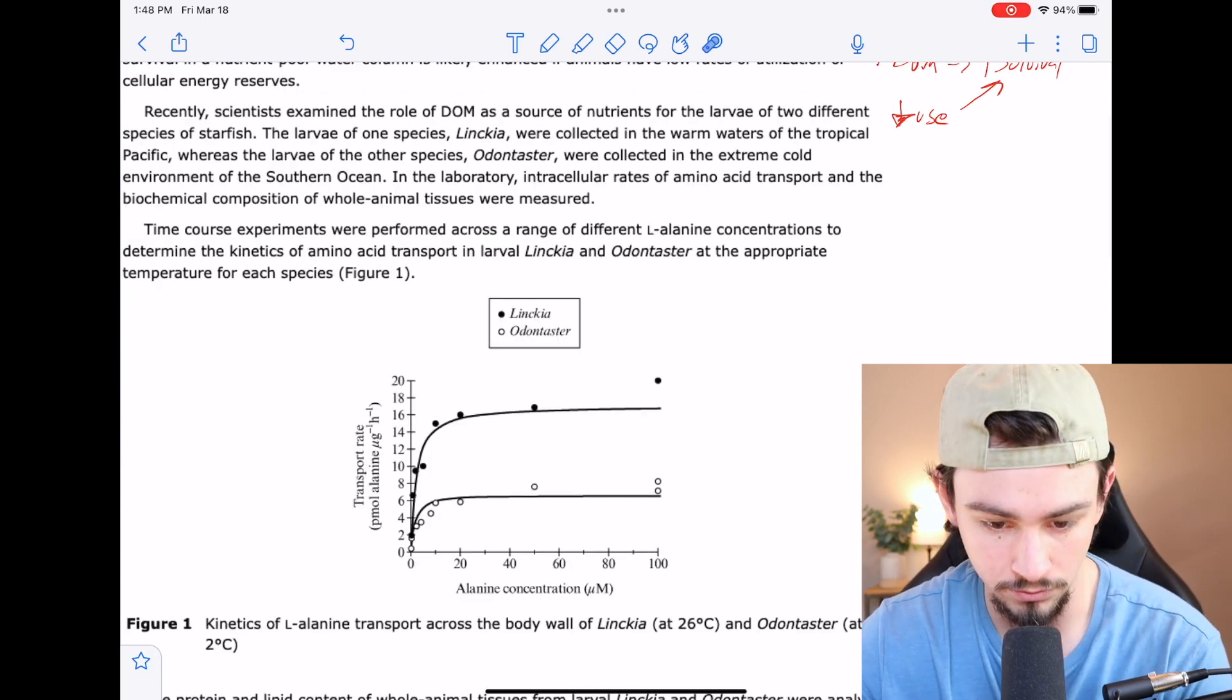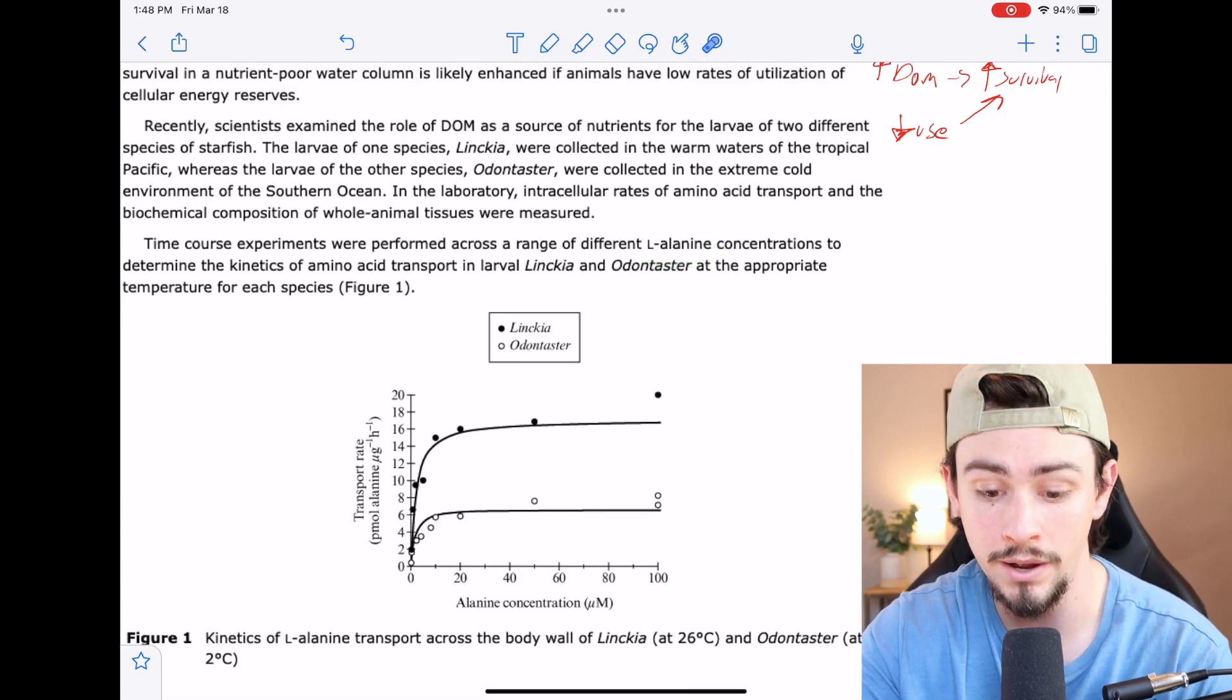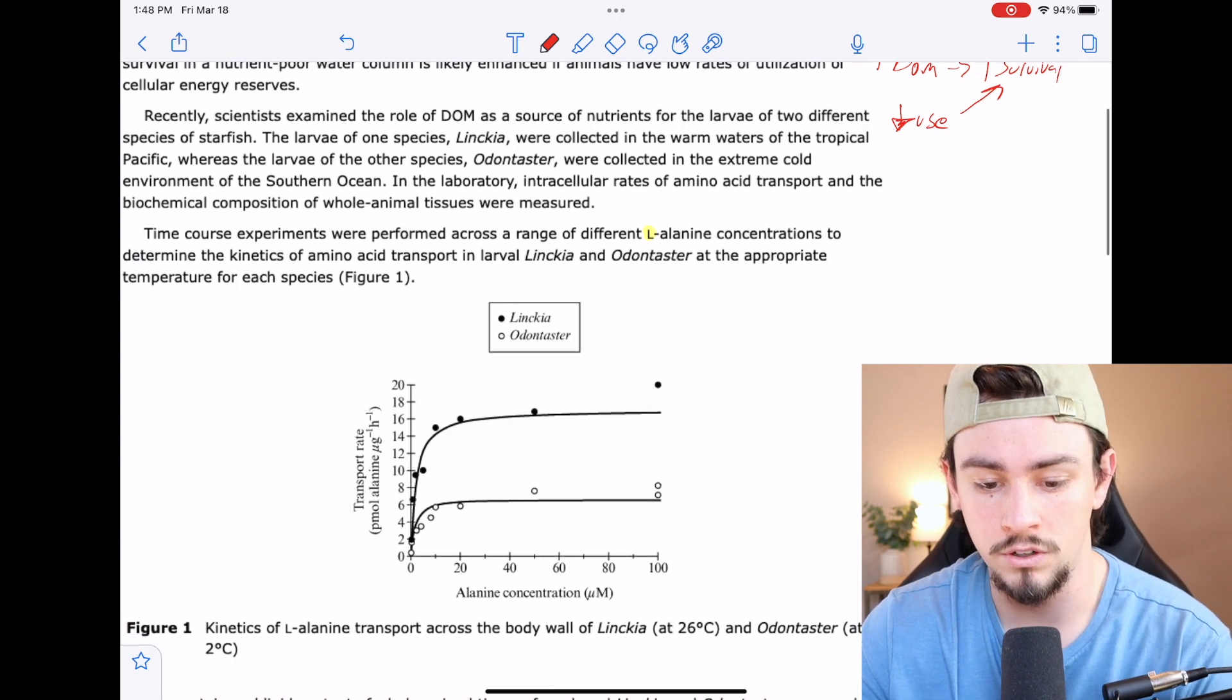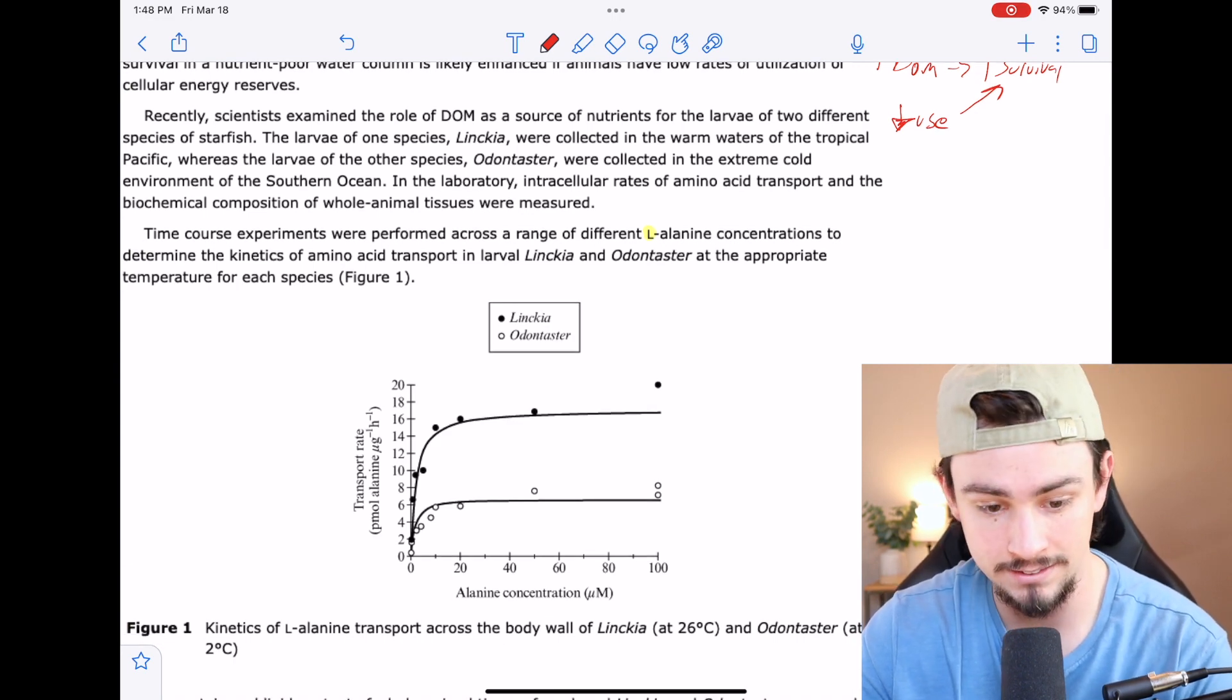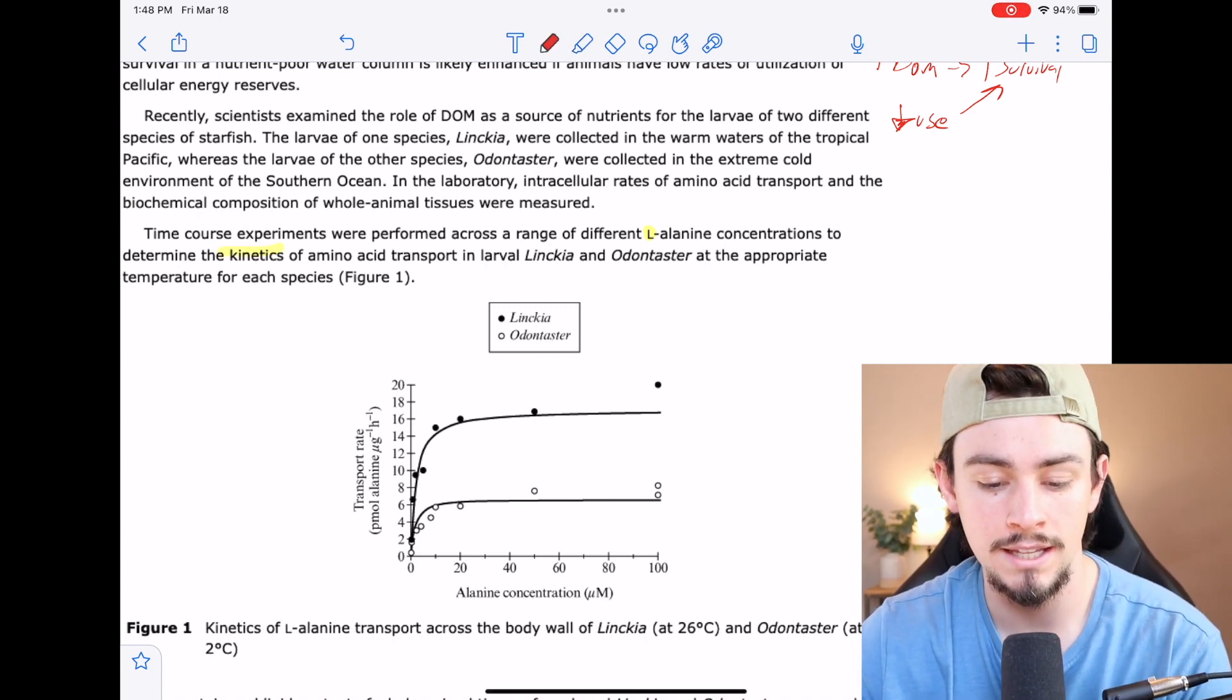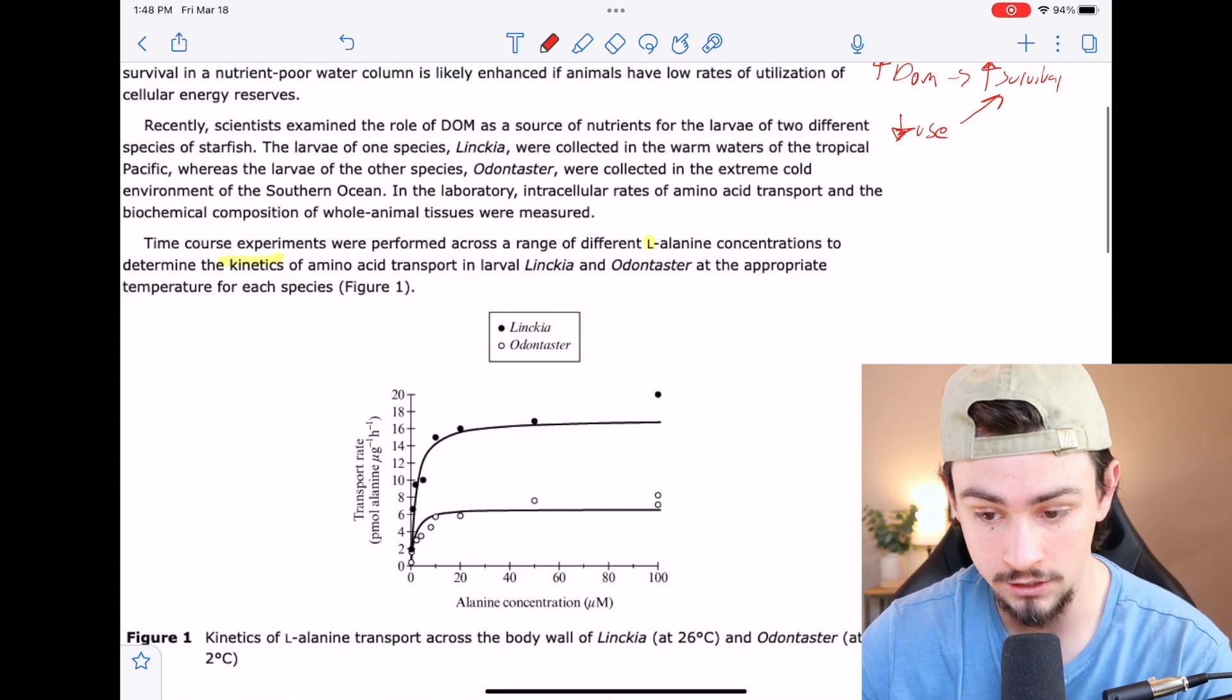Time course experiments were performed across a range of different L-alanine. Remember, this is important because amino acids have stereochemistry. That's also the stereochemistry that we use as humans. Performed across a range of different L-alanine concentrations to determine the kinetics. I told you, the kinetics of amino acid transport in larval Linka and Odontaster at the approximate temperature for each species.